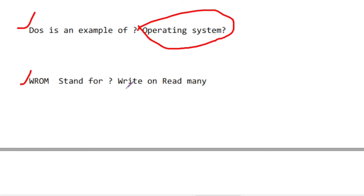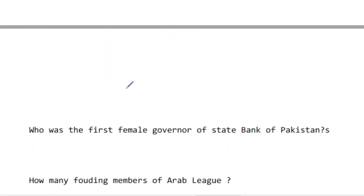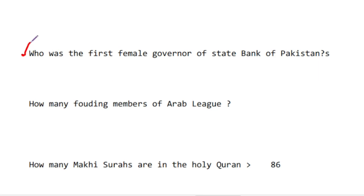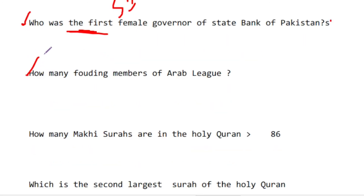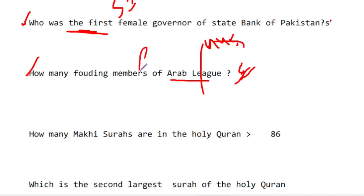CD: write once, read many. The first female governor of the State Bank of Pakistan is asked. The capital of Egypt is Cairo. Cairo is in Egypt.